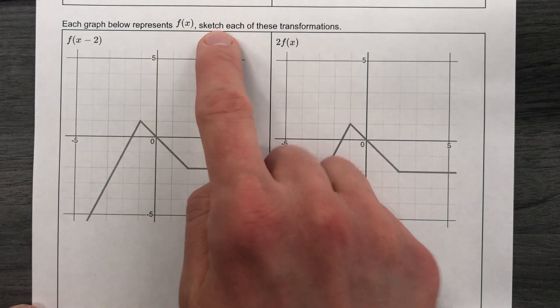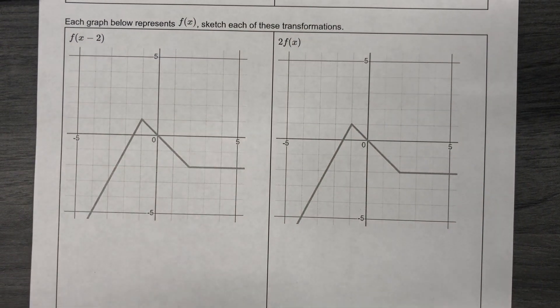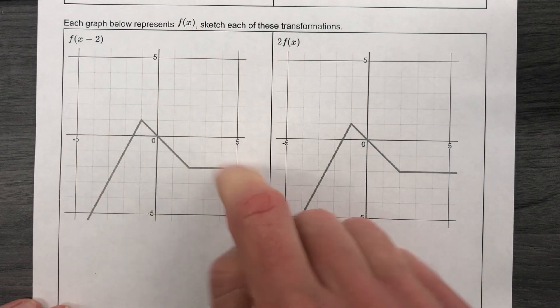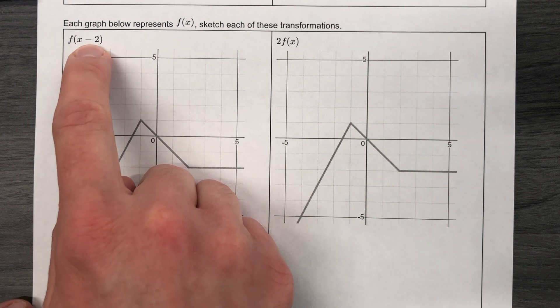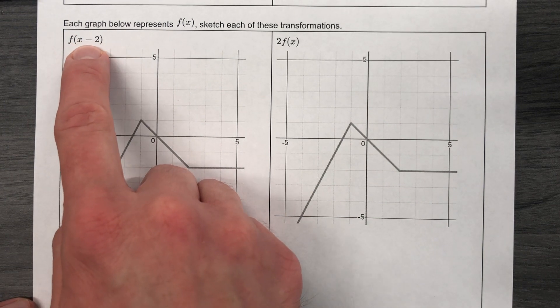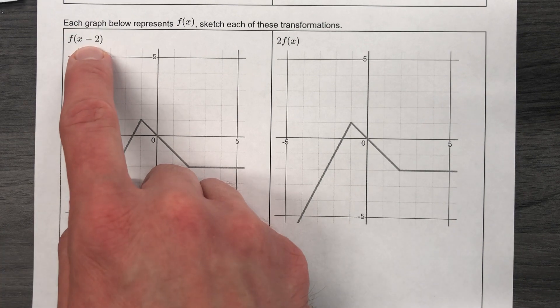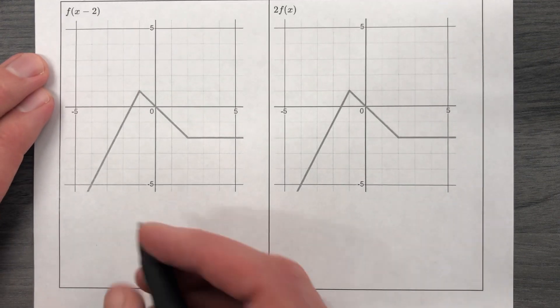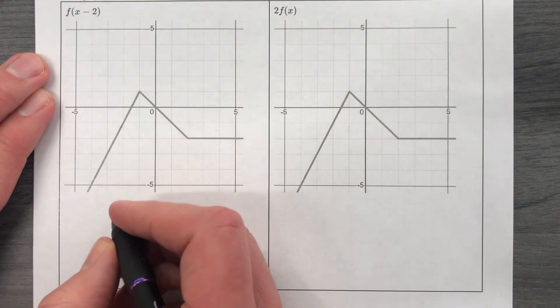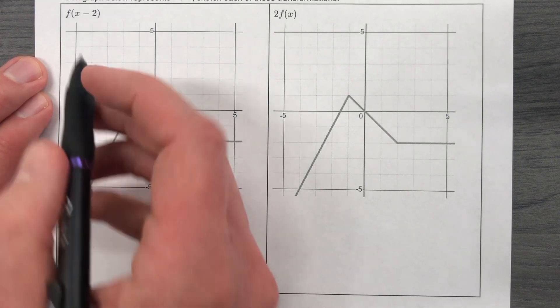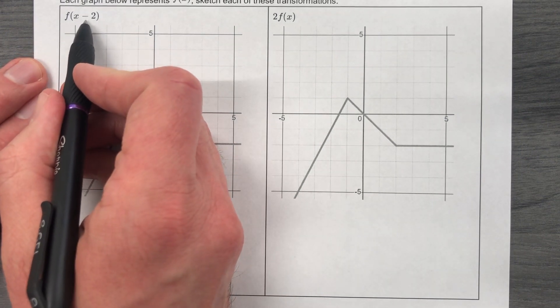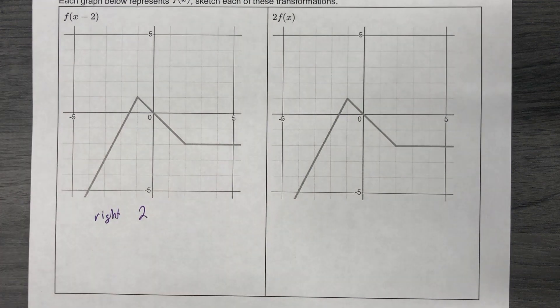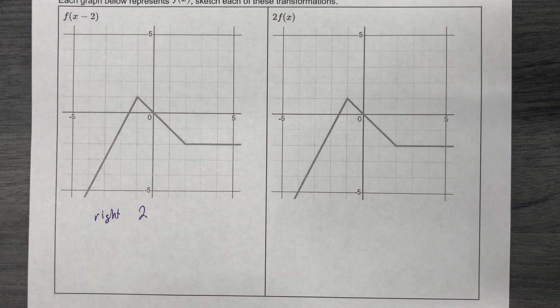Each graph below represents f of x, and we're going to sketch each of these transformations. And they get tricky. So if this is f, then we're going to sketch f of x minus 2. And notice that we have minus 2, the x minus 2, in parentheses, which means that we are going to use the purple pen, and we're going to write down some things that are about to happen. So this x minus 2 is going to mean that I move horizontally in the positive direction. So I'm going to go write 2. That's all I have to do.